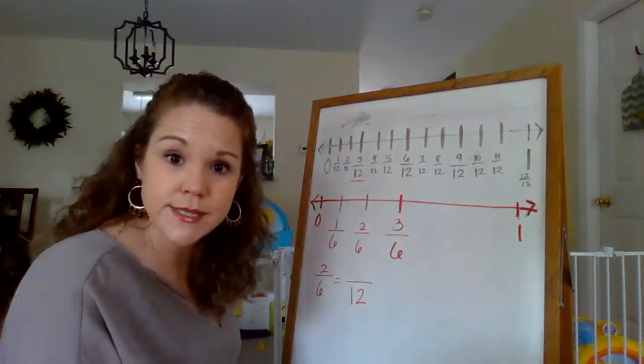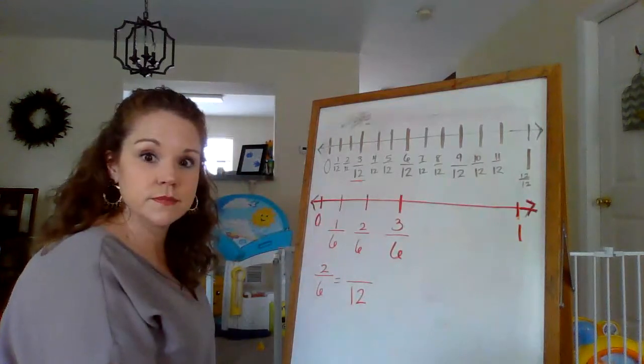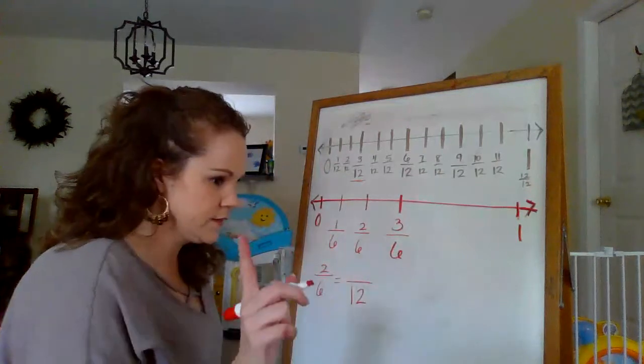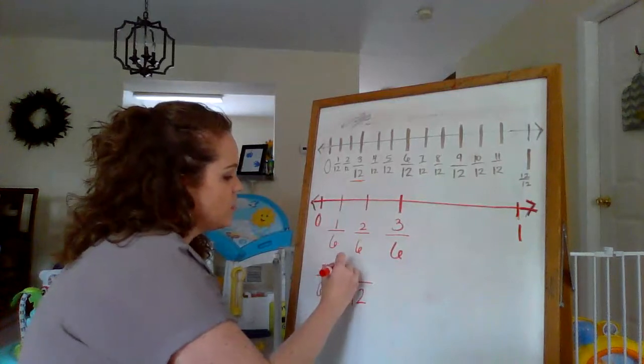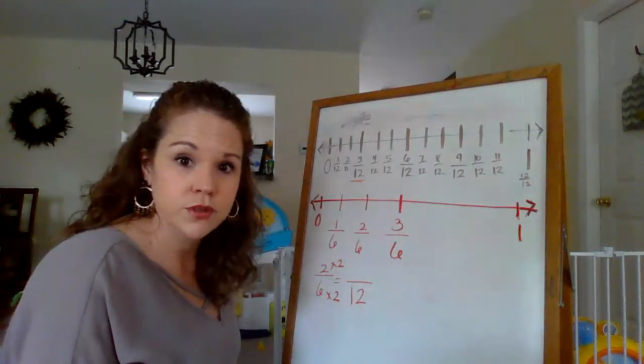You know what? I'm just going to do this. 6 times what is 12? 6 plus 6? Two. Right? 2 sixths is 12. So that means up here I need to times 2 also. What is 2 times 2? Four.